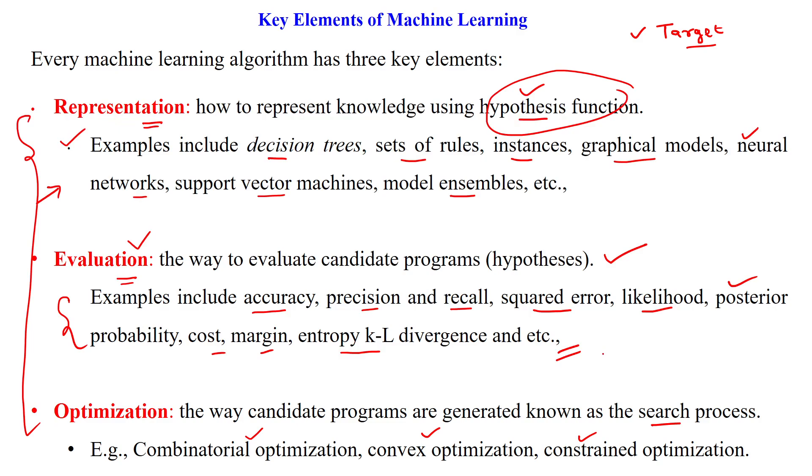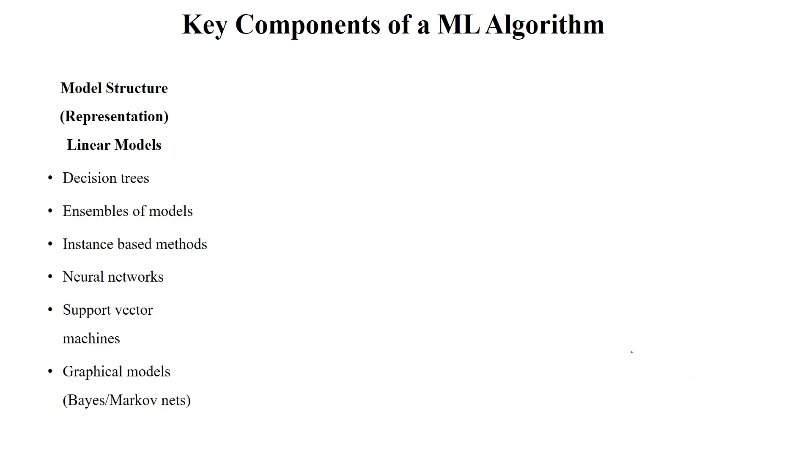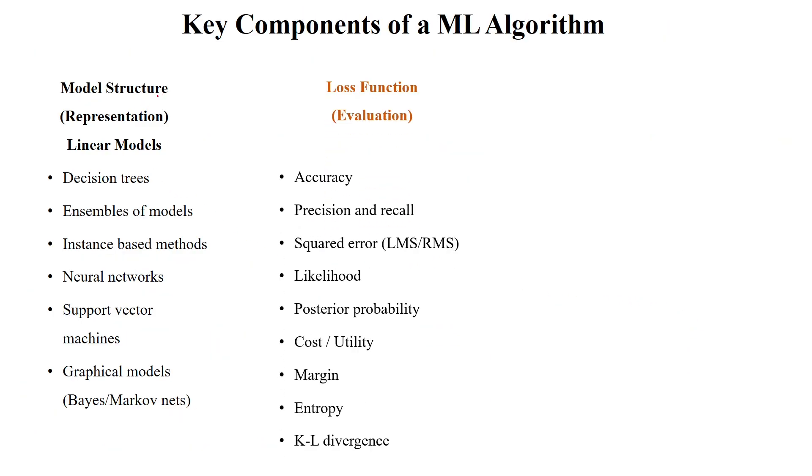During the evaluation, we will find out the error. If there is error, we have to reduce the error by adjusting the weights by using optimization methods. So that's what given here, the model structure is represented by using any one of these methods, which is given in the previous slide. And error can be calculated by using the evaluation step using any one of these metrics based upon the problem statement.